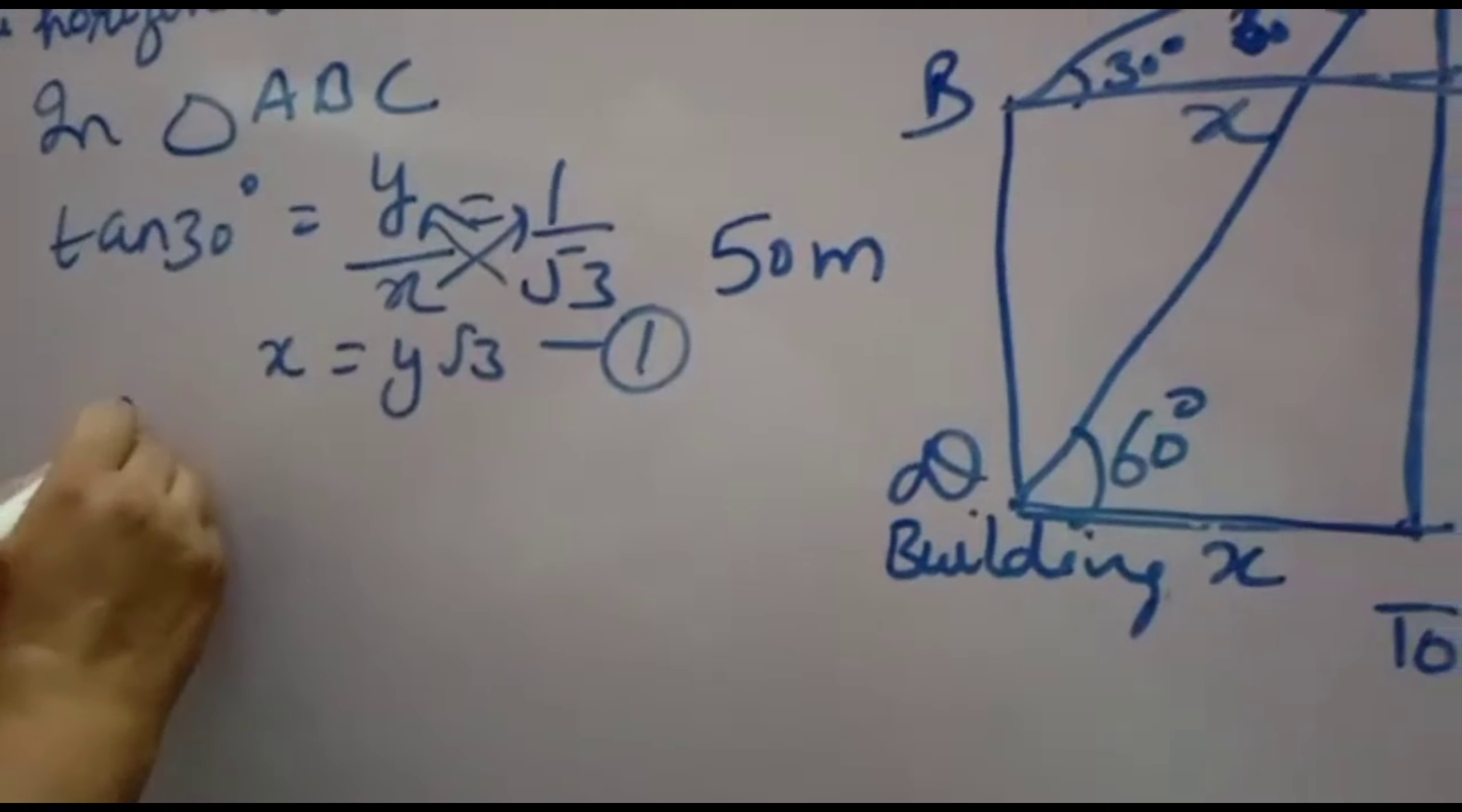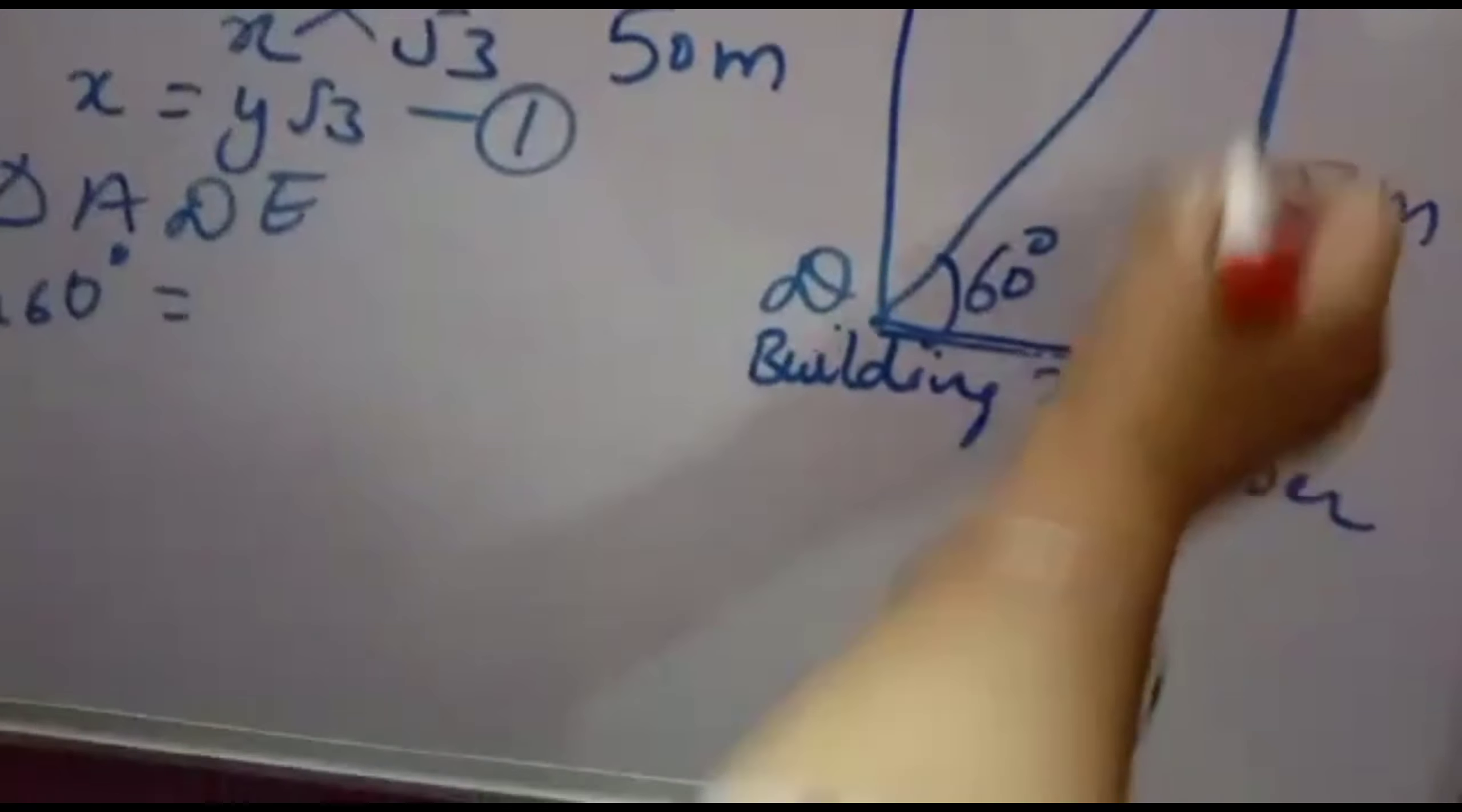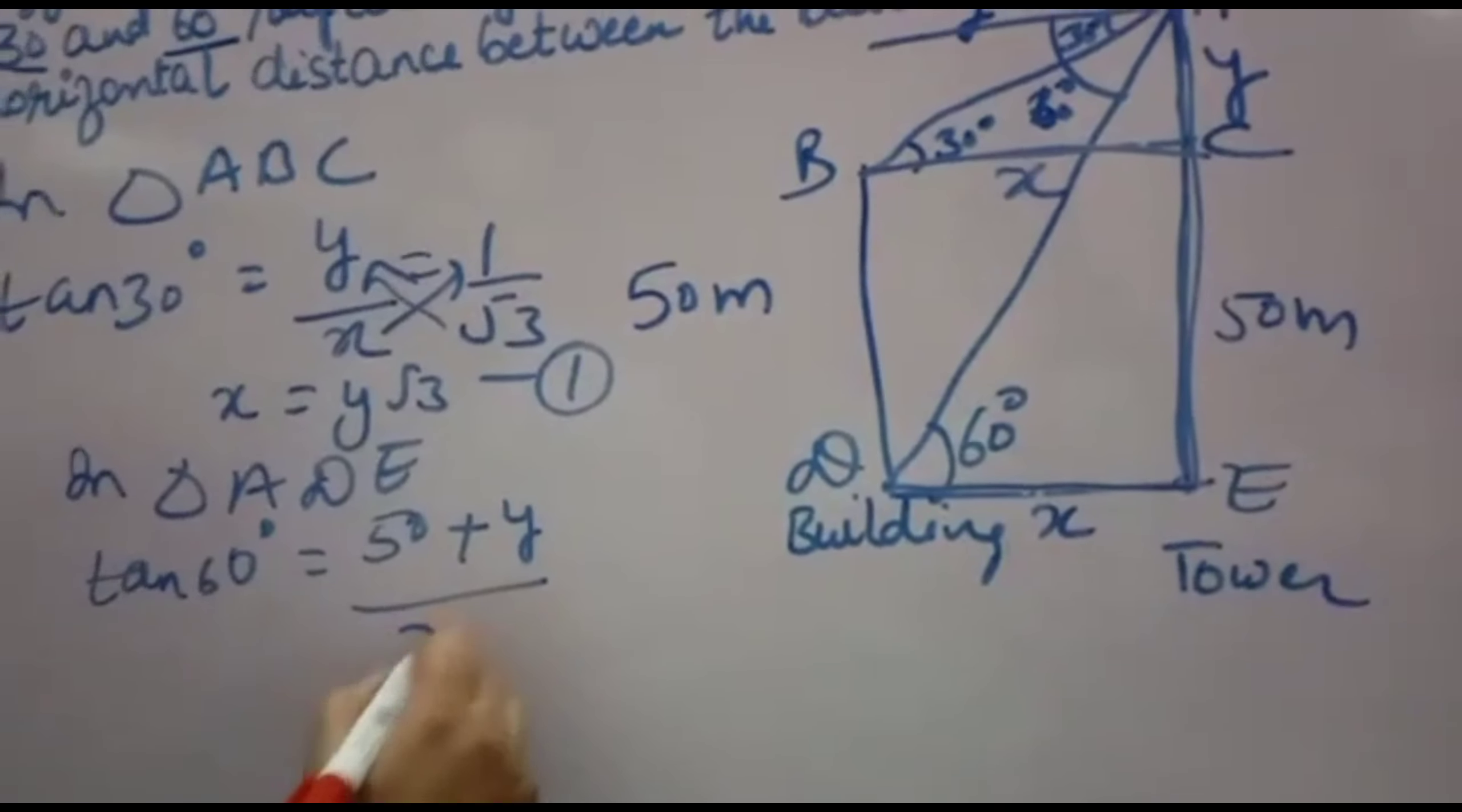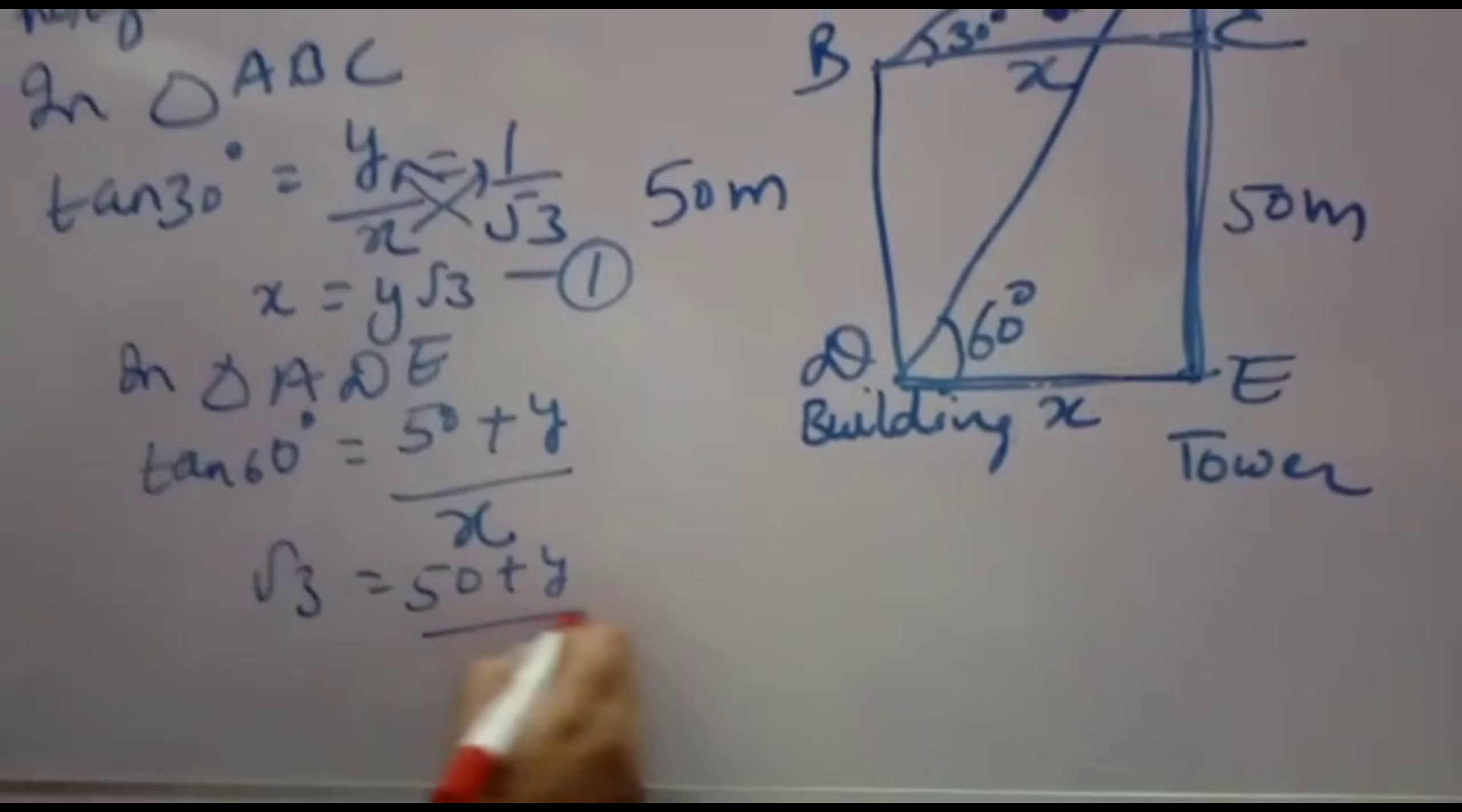Now you will take triangle ADE. Again tan60 you will take. Because you have to take perpendicular and base. Perpendicular, see this full. So 50 plus y will come over base will come x. Now tan60. tan60 is root 3. So root 3 is equal to 50 plus y over x.